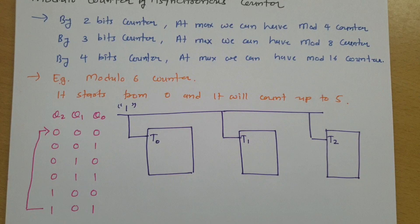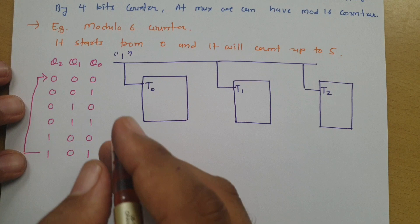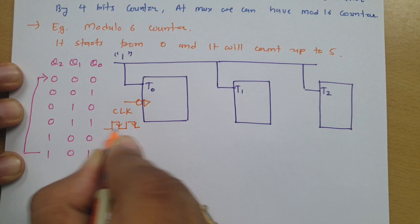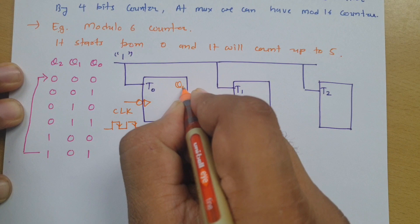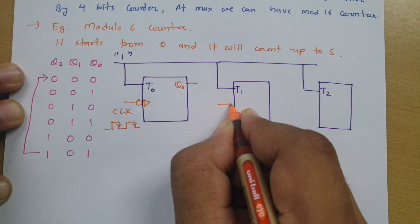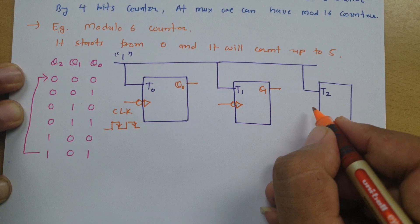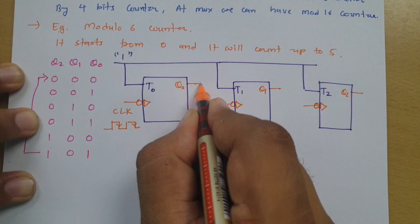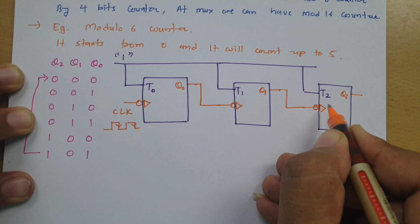All flip-flops are negative-edge triggered. A clock is provided to the first flip-flop, whose output is Q0. Q0 acts as the clock for the second flip-flop, whose output is Q1. Q1 then acts as the clock input for the third flip-flop, whose output is Q2.